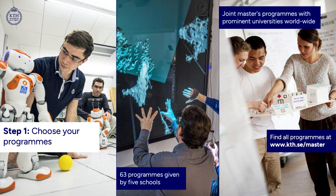The first step: you get to choose your program. I picked my program based on the fact that I was 100% sure I wanted to do architecture. I went to kth.se/master and looked for an architecture program — luckily there is one. As mentioned, there are 63 programs given by five schools, so there's something for everyone. When you apply, you get to pick your top four programs. Even if you're undecided, you have four slots to fill, but there is a ranking which we'll mention later. There's also first-hand information from students and staff on our website and blog.